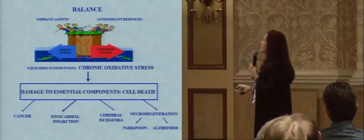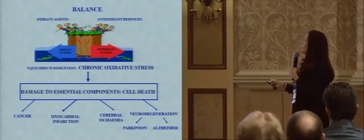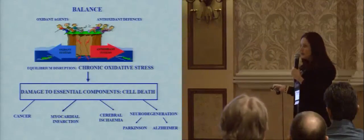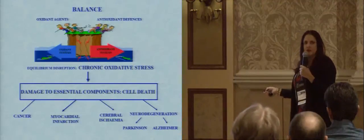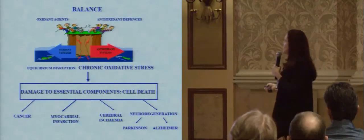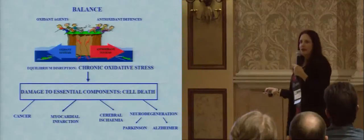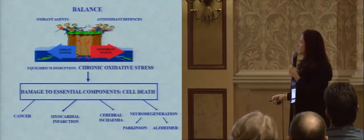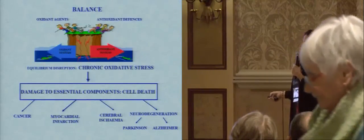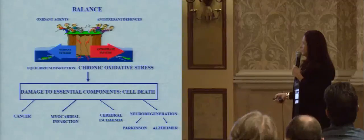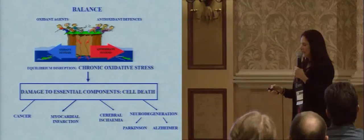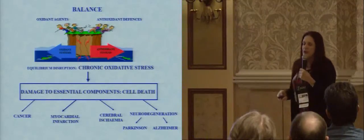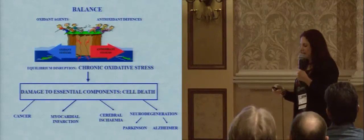If we maintain this balance, there is no problem. But if this equilibrium is disrupted, chronic oxidative stress appears, leading to cell death and the appearance of different diseases such as cancer, myocardial infarction, cerebral ischemia, and neurodegeneration such as Parkinson's and Alzheimer's. You can see how important it is to maintain that balance.